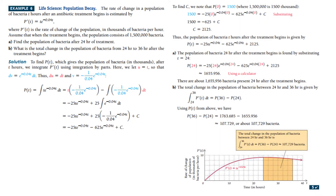Life is a word problem, and we can certainly use this for word problems. The rate of change in a population of bacteria, T hours after an antibiotic treatment begins, is estimated by P′(T) = T e^(−0.04T). Find the population of the bacteria after 24 hours of treatment, and find the total change in population from 24 to 36 hours.